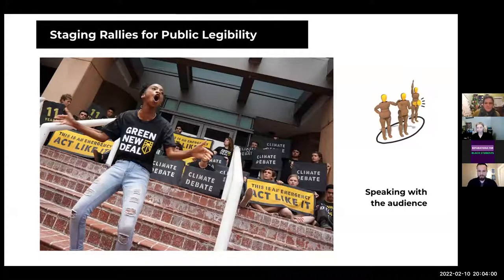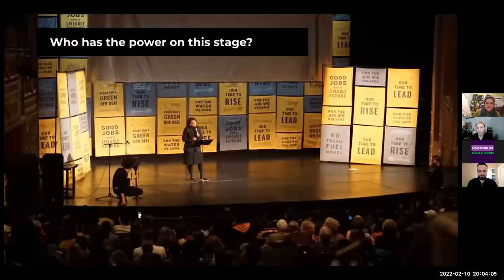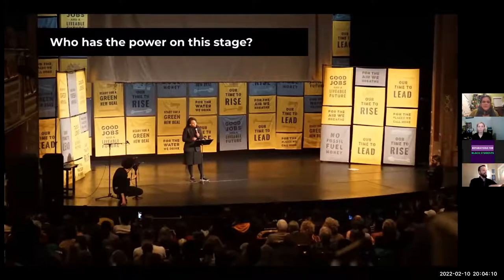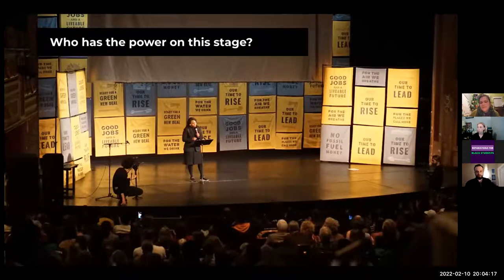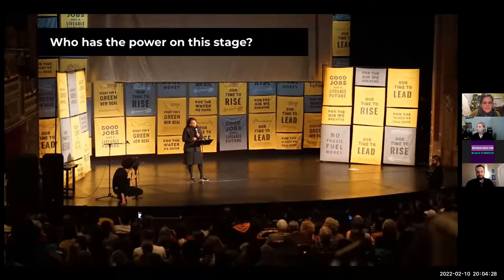All right, back to it. This is an image of the national speaking tour that Sunrise led to pressure politicians to commit to backing the Green New Deal. This is in the spring, right after the Green New Deal is announced — it's still very much DC legislation. That's Representative Pressley speaking there. What you're seeing is that this backdrop is built from demonstration signs — things that could be taken out into the street. That makes sure this event is larger than any speaker on the stage.